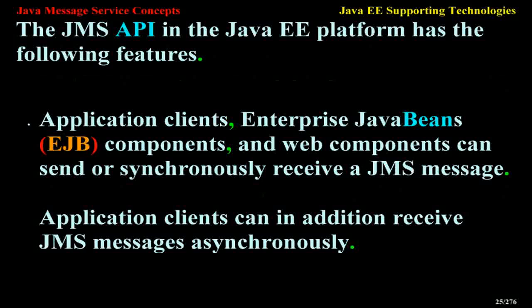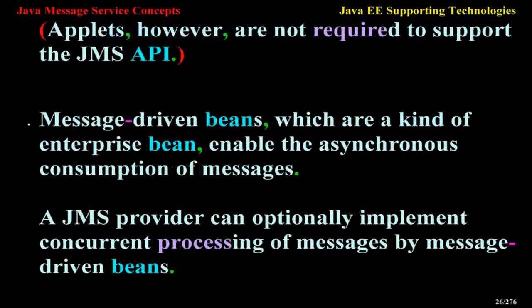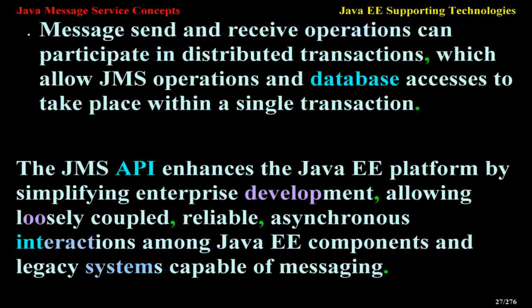The JMS API in the Java EE platform has the following features: application clients, enterprise JavaBeans (EJB) components, and web components can send or synchronously receive a JMS message. Application clients can in addition receive JMS messages asynchronously. Applets, however, are not required to support the JMS API. Message-driven beans, which are a kind of enterprise bean, enable the asynchronous consumption of messages. A JMS provider can optionally implement concurrent processing of messages by message-driven beans. Message send and receive operations can participate in distributed transactions, which allow JMS operations and database accesses to take place within a single transaction.